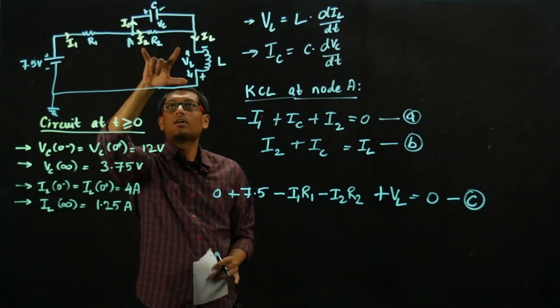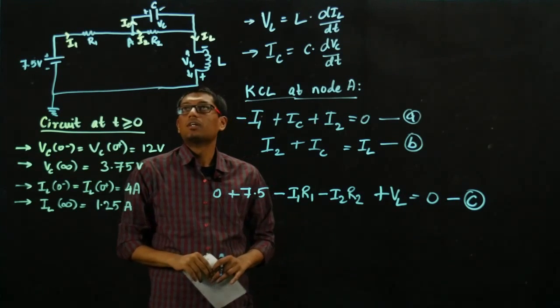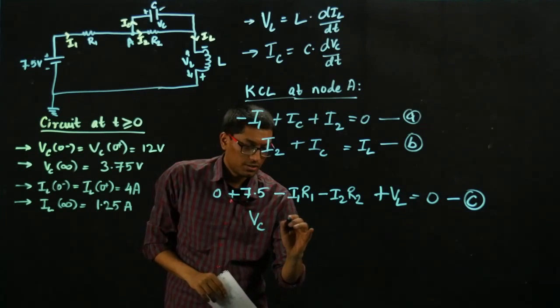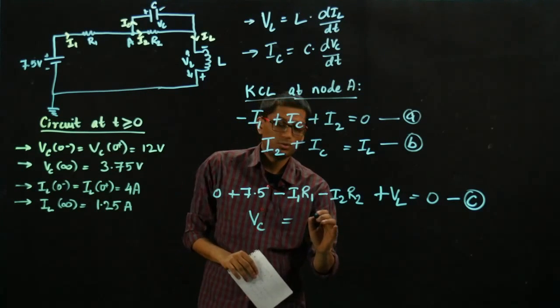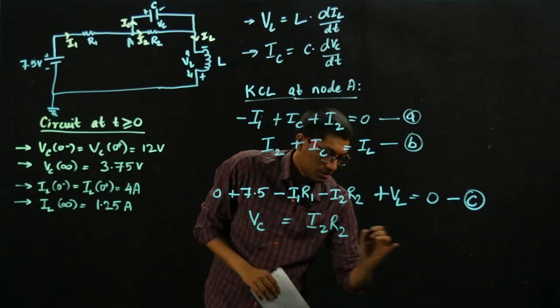Now if I compare R2 with the capacitor, both of these components are in parallel to each other, which implies my voltage across the capacitor has to be equal to the voltage drop across resistor R2. So let's call that equation D.